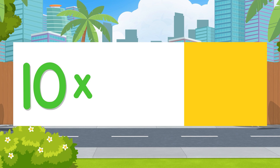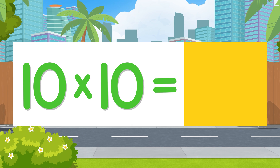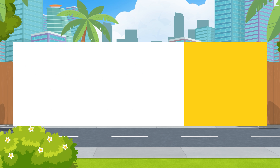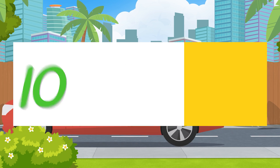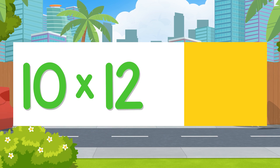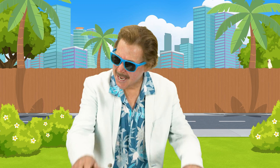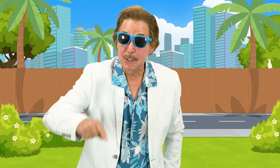Ten times ten is... Ten times eleven is... Ten times twelve is... To multiply by ten, you take the number then add a zero to it — and that's the end. To multiply by ten, you take the number then add a zero to it — and that's the end.